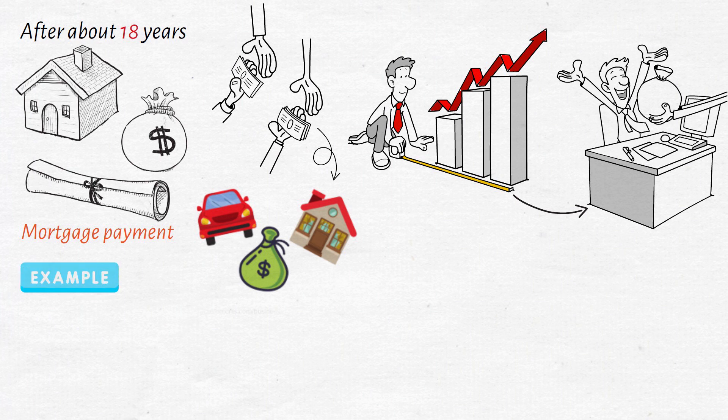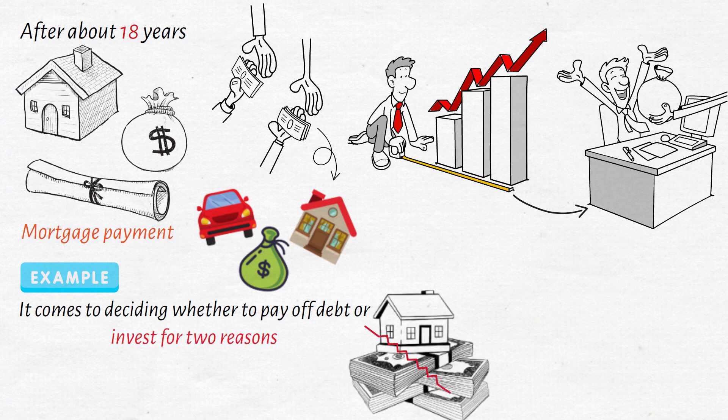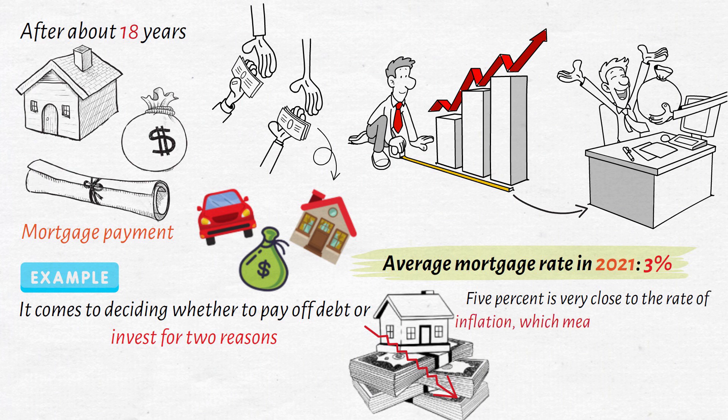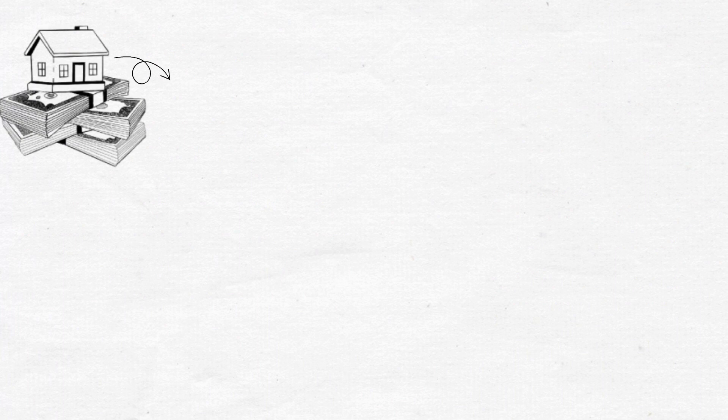A mortgage is a more extreme example when it comes to deciding whether to pay off debt or invest for two reasons. The first is that a mortgage is typically a very low-interest loan, possibly the lowest available, with the average mortgage rate in 2021 around 3%, and currently nearing 3.5%, very close to the rate of inflation, which means you're borrowing money for basically nothing. For this reason, mortgages are actually desirable for some investors.